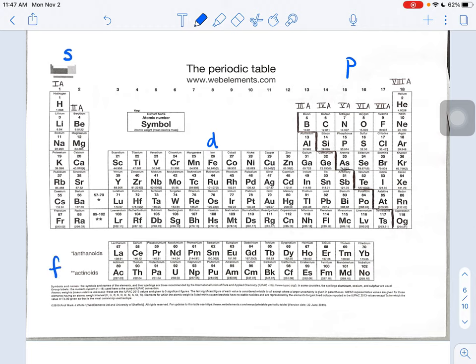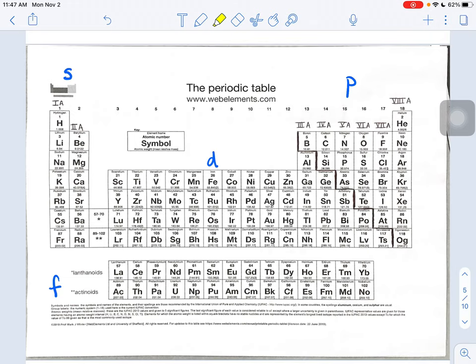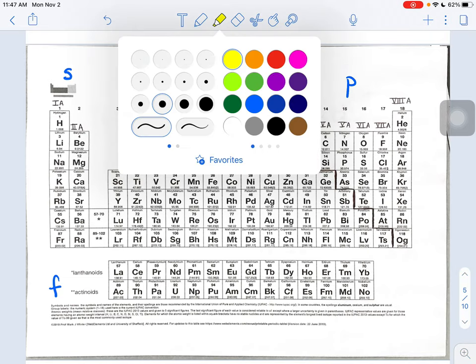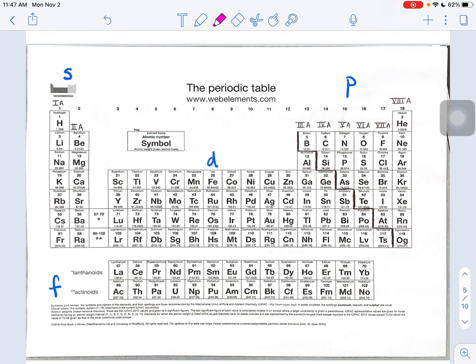So I'm going to color code my periodic table here for you guys. I'm going to do the S block. I'm going to color that guy in pink. And so it's going to be those two columns on the right-hand side. And then I'm also going to include helium. That one's a little special over there.